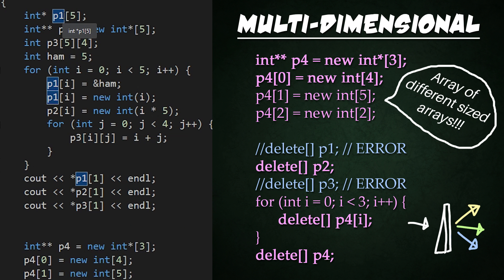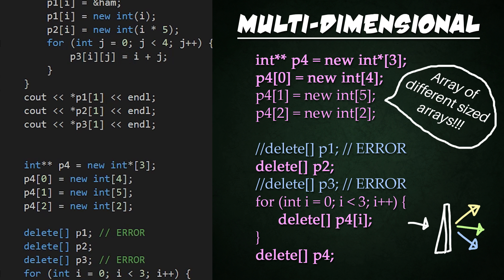And that is because we're trying to deallocate memory for something that was called off the stack. If we go up to P1, again, P1 was just a regular array called off the stack. Meanwhile, P2 was actually dynamic. So that could be freed up, but P1 cannot. So trying to delete the array right there will actually cause an error. And the same for P3. This is just a regular array of arrays. So we don't need to deallocate that. The program will take care of that for us. So we can comment both of those out and it'll work just fine.